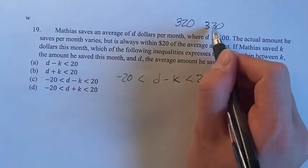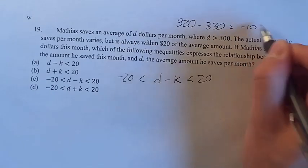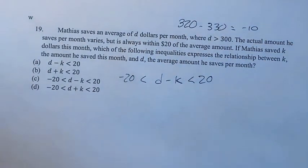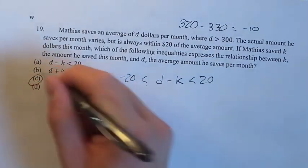Our value of 320 and 330, this is within $20 of 320, but when you subtract them, negative 10. So we have to take into account when K is larger than D, so we have to do negative 20 is less than D minus K is less than 20, and C is going to be your final answer.